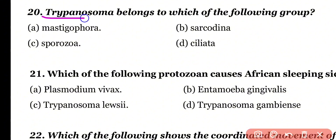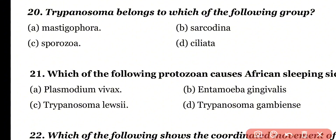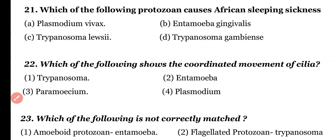Question number 20: Trypanosoma belongs to which of the following groups? Mastigophora, Sarcodina, Sporozoa, or Ciliata? Correct answer is option A. Trypanosoma belongs to the class Mastigophora.